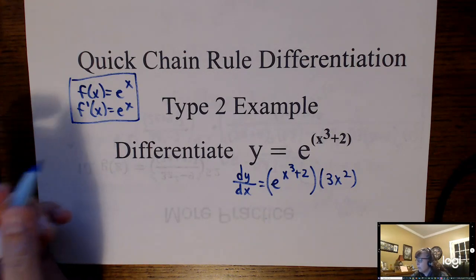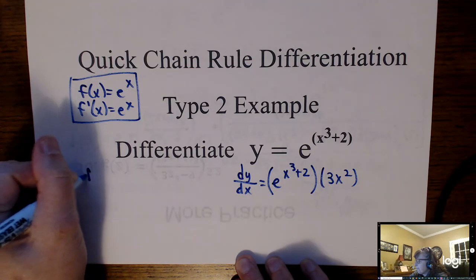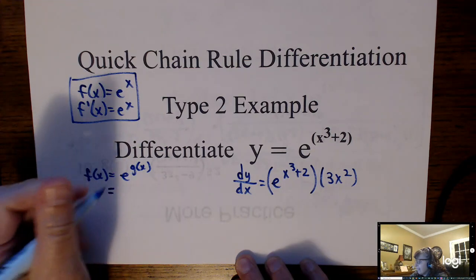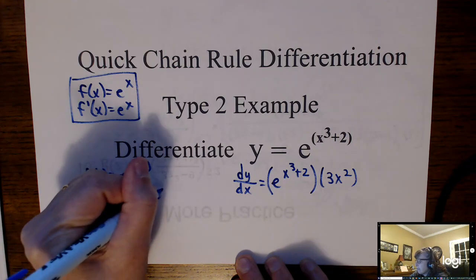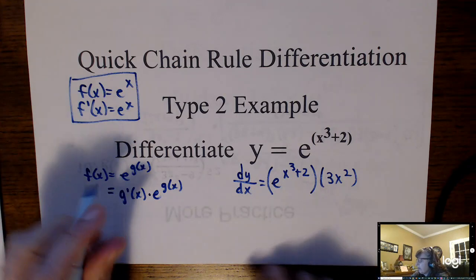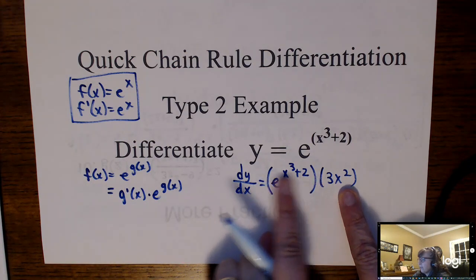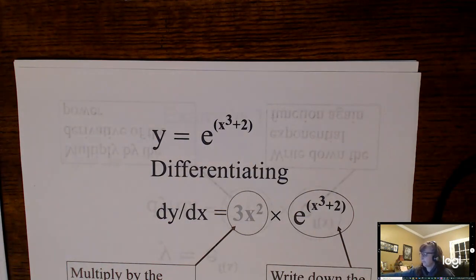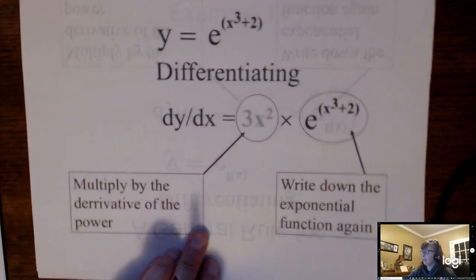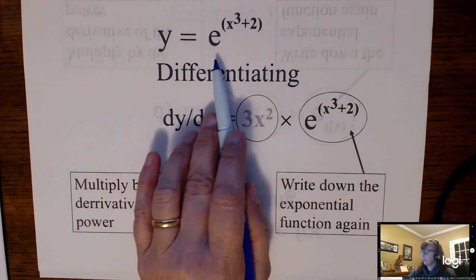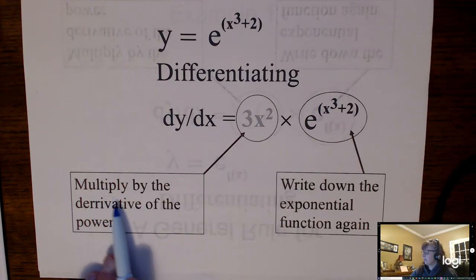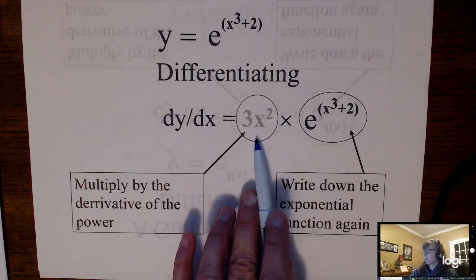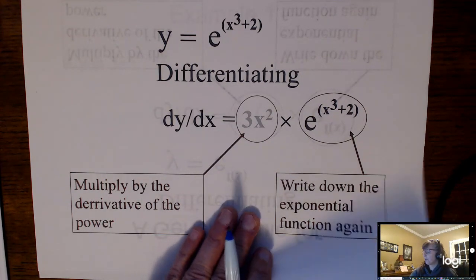If you write it out as a rule: if you have some function e to the g of x, meaning it's more complicated than x, then it's going to be the derivative of the power times e to the g of x. I wrote the derivative of the power on the right, but you could just as easily write it on the left — it doesn't matter which side you put it on.